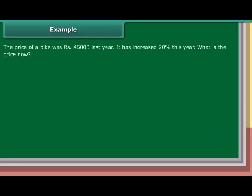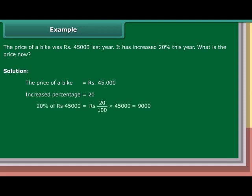Example: The price of a bike was Rs. 45,000 last year. It has increased by 20% this year. What is the price now? Solution: 20% of Rs. 45,000 equals 20 upon 100 into Rs. 45,000, which equals Rs. 9,000. New price equals Rs. 45,000 plus Rs. 9,000, which equals Rs. 54,000.